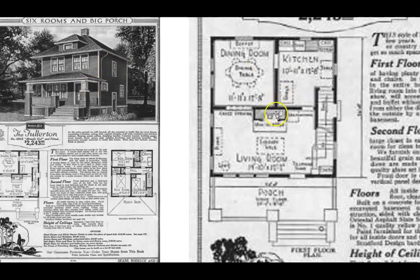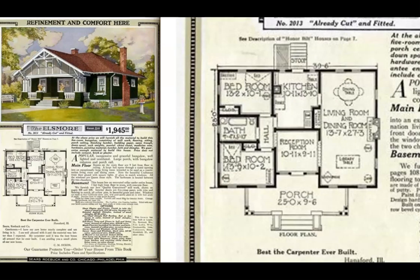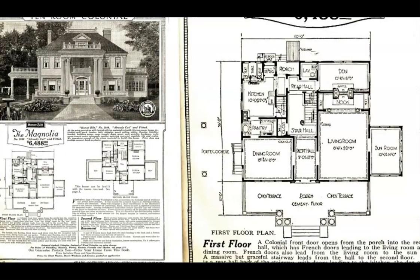We saw something like this four-square style — similar to the last, these columns might be a little easier, a few less columns. The roof wouldn't be too bad but there's a lot of detail. And that's the mansion of the group — I wouldn't take that on. The Magnolia: I would not do that in three weeks.